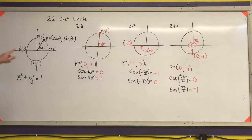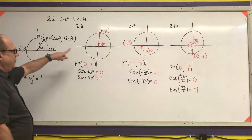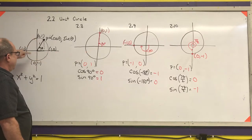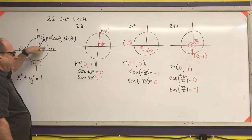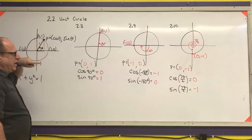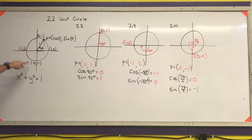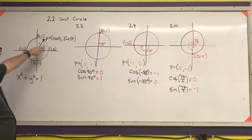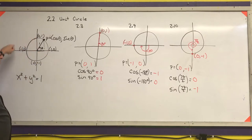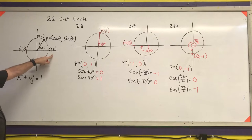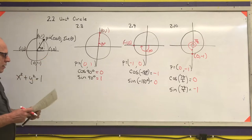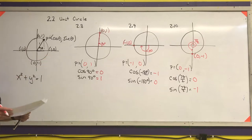For any quadrantal angle — one that lies on either the x-axis or y-axis — you should be able to immediately draw your unit circle, come up with the coordinates for that point, and determine the sine and cosine for those angles.